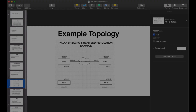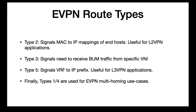Now we'll talk about EVPN route types. EVPN type 3 is used by a VTEP to signal its intent to receive BUM traffic on a specific VNI. Type 2 signals MAC-to-IP mappings of end hosts and is useful for Layer 2 VPN applications. Type 5 signals VRF-to-IP prefix and is useful for Layer 3 VPN applications. You also have type 1 and type 4, which are used for EVPN multi-homing.